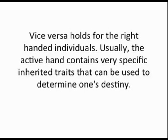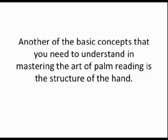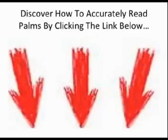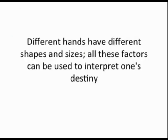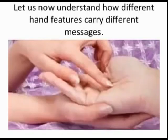Usually the active hand contains very specific inherited traits that can be used to determine one's destiny. So let's talk about understanding the structure of the hand. Another of the basic concepts that you need to understand in mastering the art of palm reading is the structure of the hand. Different hands will have different sizes and shapes, and all of those factors can be used to interpret one's destiny. Let us now understand how different hand features can carry different measures and messages.